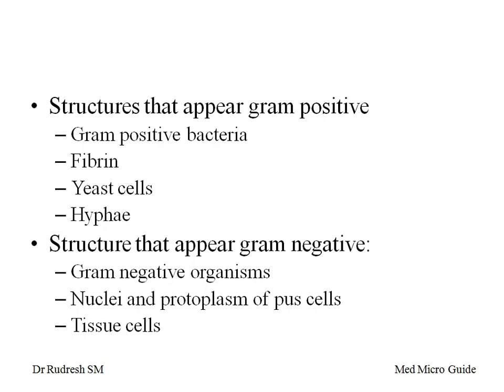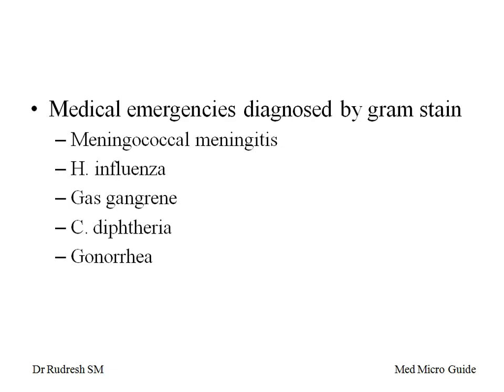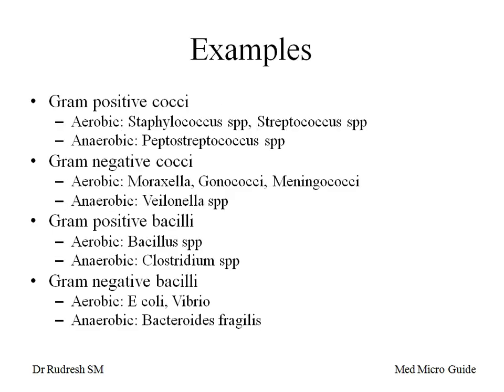Structures that appear gram positive are gram positive bacteria, fibrin, epithelial cells, and hyphae. Structures that appear gram negative are gram negative organisms, nuclei, and protoplasm of pus cells and tissue cells. Applications of Gram staining are: to detect the quality of specimens, to select appropriate culture media, to detect the appropriate antibiotic for early presumptive treatment, for rapid detection of meningococci, and to identify the presence of inflammatory reaction in a specimen. Medical emergencies that can be diagnosed by Gram stain include meningococcal meningitis, meningitis due to Haemophilus influenzae, gas gangrene, diphtheria infection, and gonorrhea.